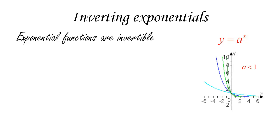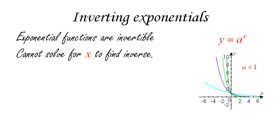The same thing happens when a is less than one, because in that case the functions are all decreasing, and therefore they still pass the horizontal line test. So if they are invertible, our task is to find the inverse. But how are we going to get x out of the exponent? There is no algebraic operation that allows us to do that — we cannot solve for x to find the inverse.